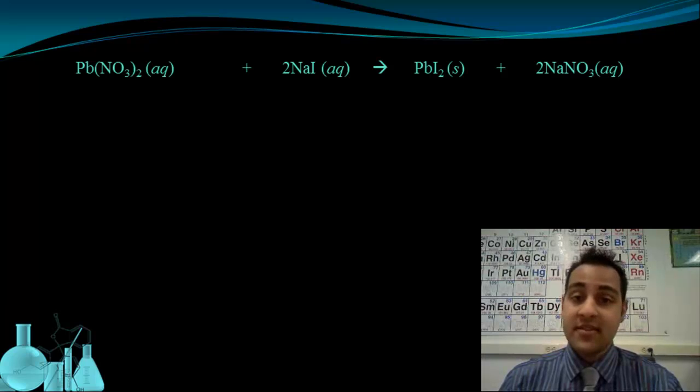We would commonly represent what happens in this reaction with this equation. This shows lead nitrate plus sodium iodide reacting to form lead iodide and sodium nitrate. Let's start by looking at some of the information that's presented in this equation. First of all, we can see that the two reactants are aqueous. Both lead nitrate and sodium iodide are labeled as aqueous. We can also see that one of the products is solid. This PbI2, the lead iodide, is solid.